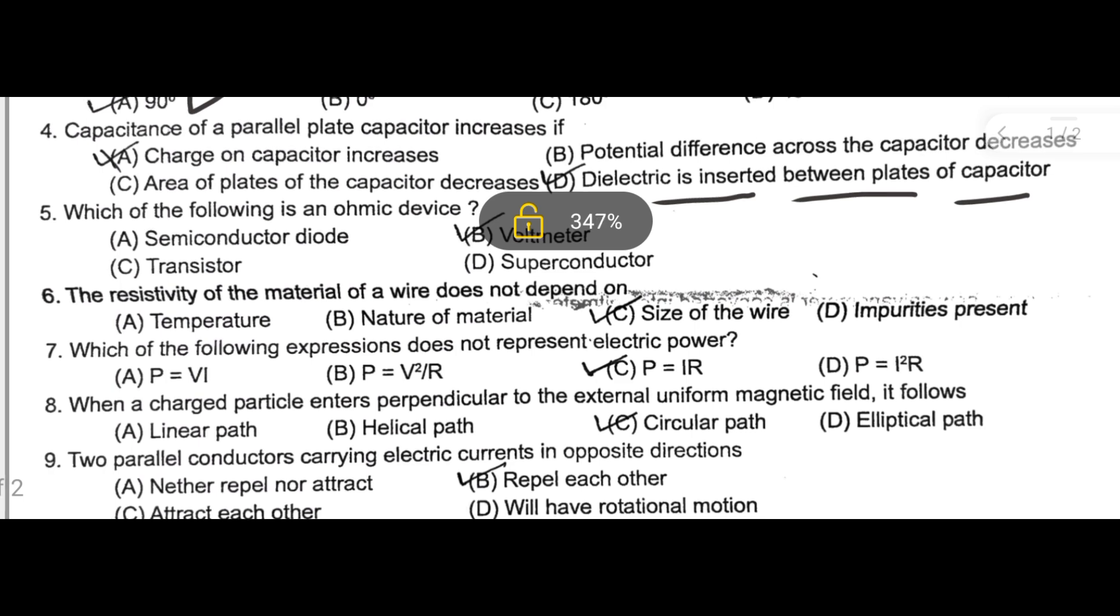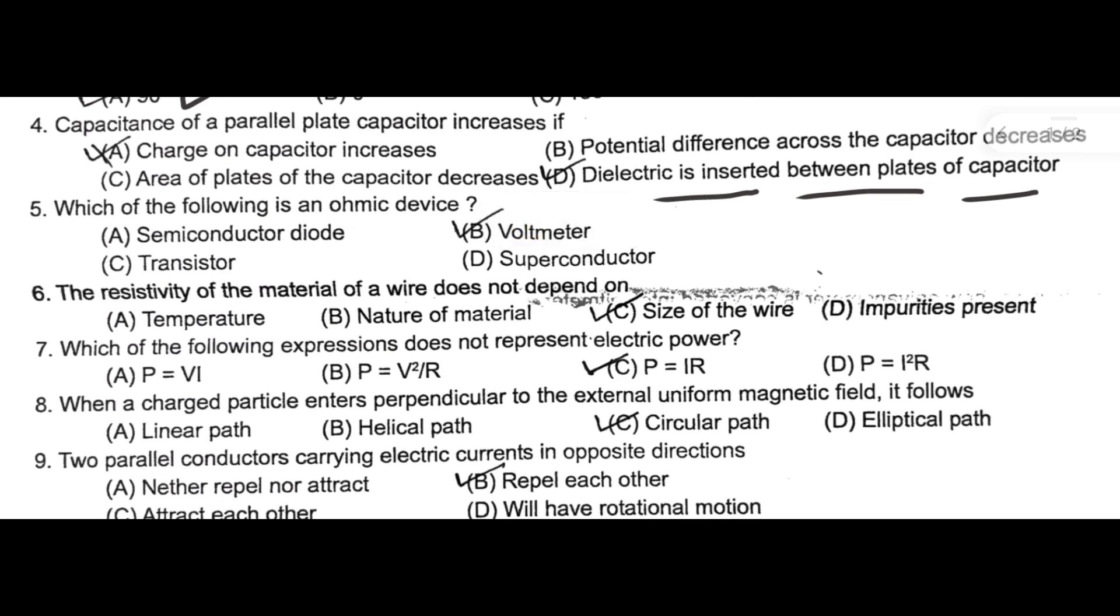Next one: which of the following is an ohmic device? The device which obeys Ohm's law are known as ohmic devices. Here voltmeter obeys Ohm's law, option B. Next one: the resistivity of the material of the wire does not depend on size of the conductor.